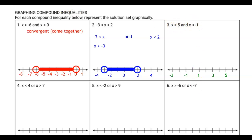X is greater than five. Let's draw that one first, and then let's do x is less than negative one second. So x is greater than five, that graph looks like this. X is less than negative one, that graph looks like this.